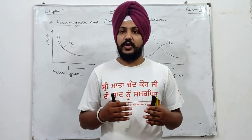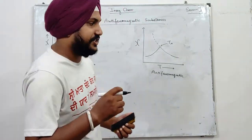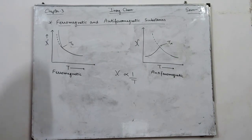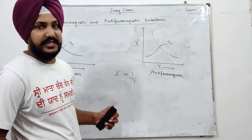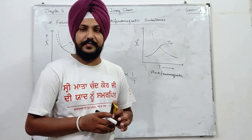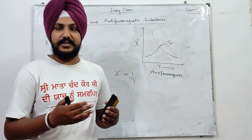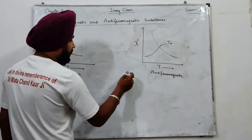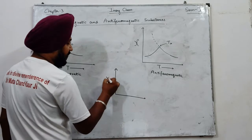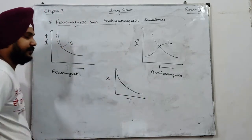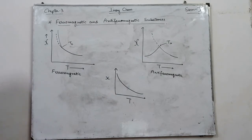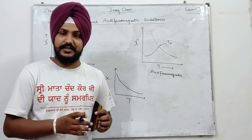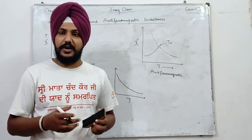Paramagnetic substances के लिए हमने यह relation find किया था: magnetic susceptibility is inversely proportional to temperature. इसका मतलब यह है कि अगर हम temperature increase करते हैं किसी paramagnetic substance के लिए तो उसकी magnetic susceptibility decrease हो जाती है, और magnetic strength या tendency to magnetize भी decrease हो जाती है। इसके लिए हमने एक graph भी देखा था — susceptibility vs temperature graph जो Curie law के according था।